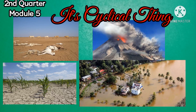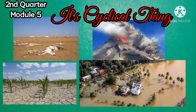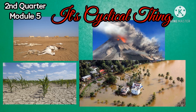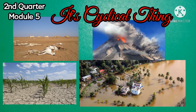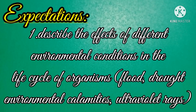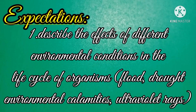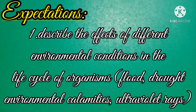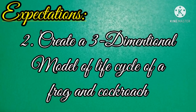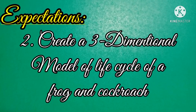Now that you already know the life cycle of different organisms, let us proceed to Module 5: It's a Cyclical Thing. At the end of this module, you should be able to describe the effect of different environmental conditions on the life cycle of organisms, and create a three-dimensional model of the life cycle of a frog and a cockroach. For our review: